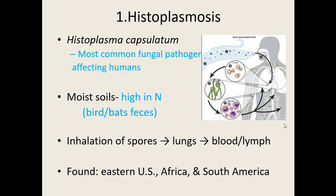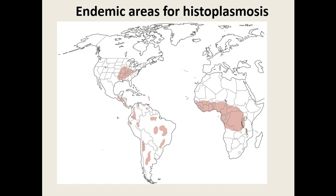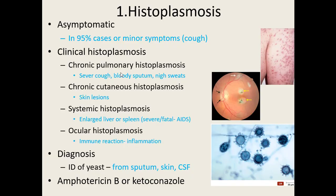Histoplasma is found in the United States, Africa, and South America — with higher rates in the Ohio River Valley, though cases do occur in areas like La Crosse. Most of the time it's asymptomatic or causes minor symptoms like a slight cough. However, clinical histoplasmosis can present as chronic pulmonary histoplasmosis, causing severe coughing, bloody sputum, night sweats, and weight loss.